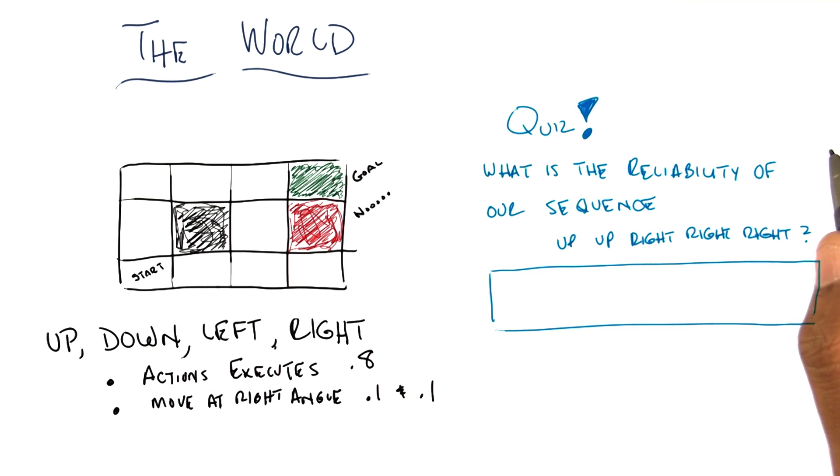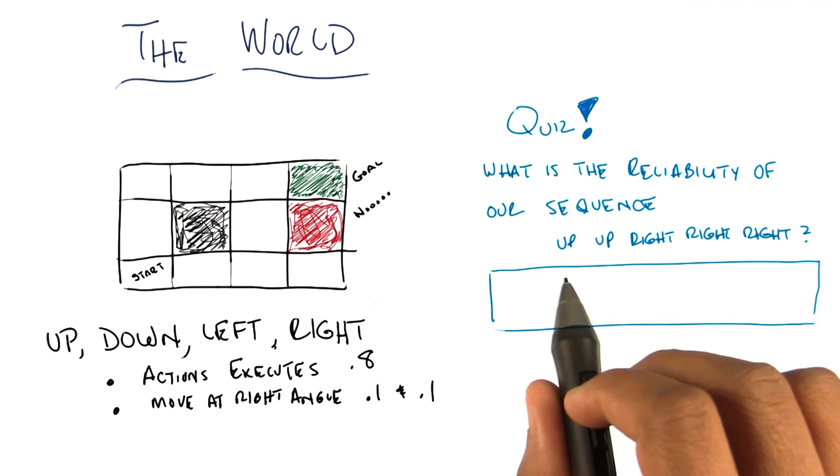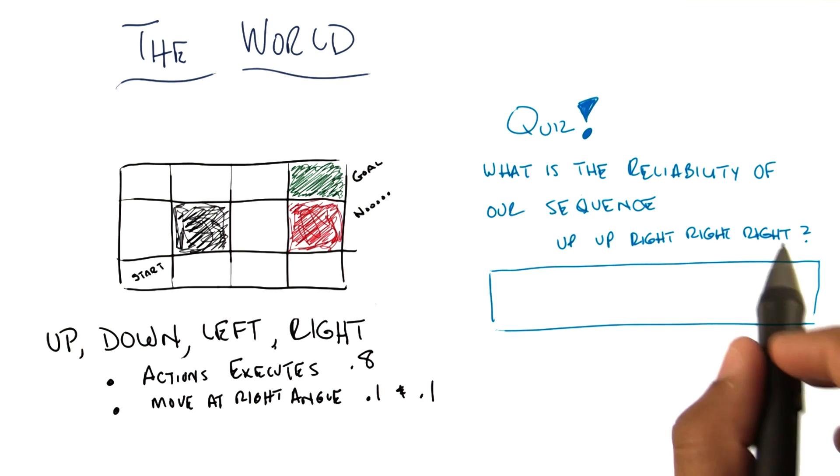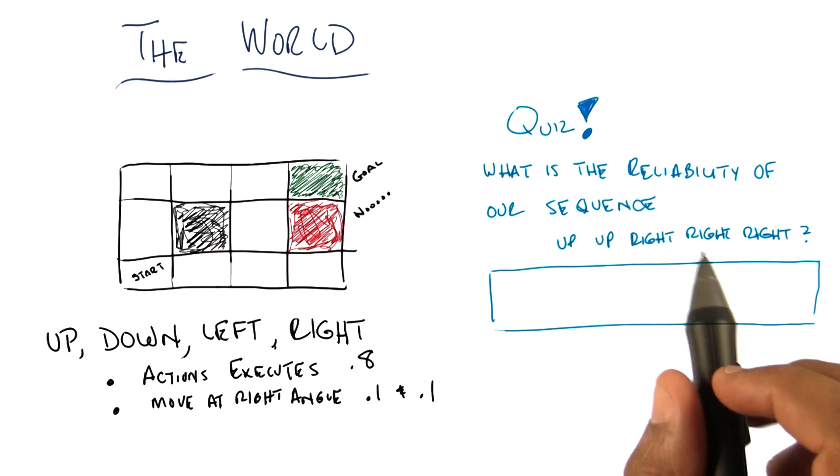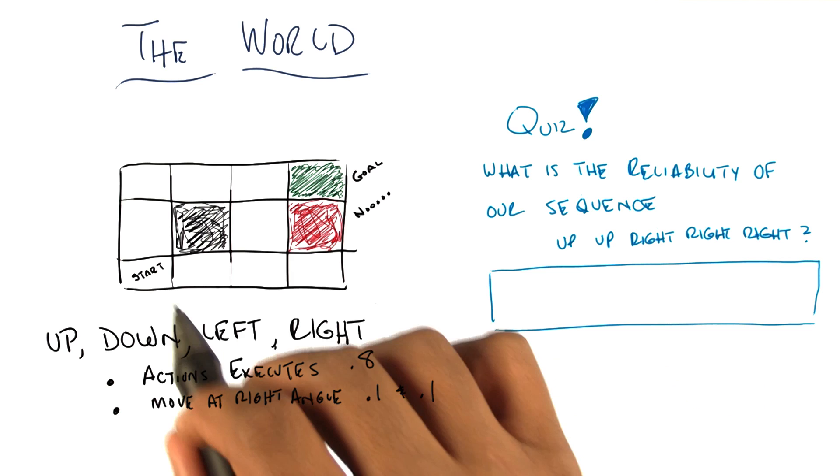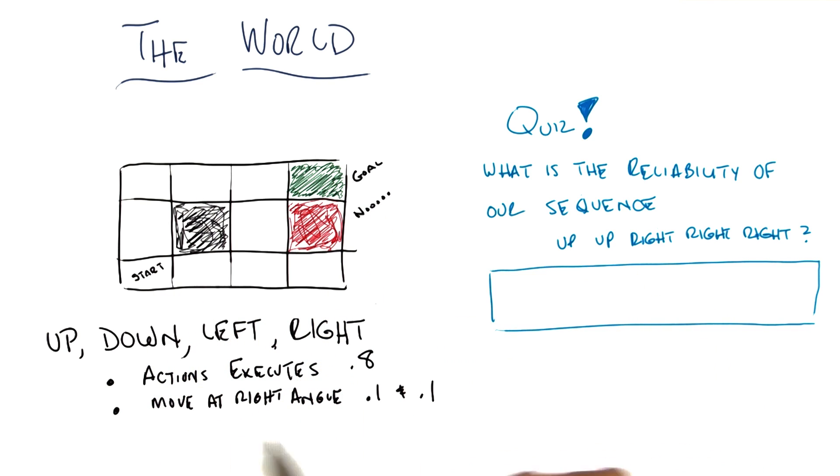So, here is my quiz question for you, Michael. Do you recall, we came up with two sequences, and the one that I decided to keep was up, up, right, right, right. My question to you is, what is the reliability of the sequence up, up, right, right, actually getting you from the start to the goal, given these probabilities, this uncertainty?